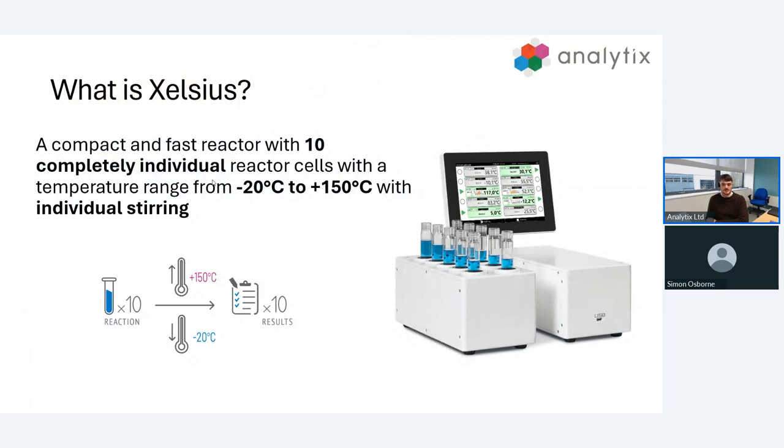What is Excelsis? Excelsis is a 10 position reaction station capable of independent temperature control in all 10 positions. We have a huge temperature range from minus 20 all the way to 150, and with independent control we can have one vial at minus 10 and the other at 140 with no problems. We also have independent stirring in all 10 vials. At its heart, Excelsis is a 10 in 1 reactor capable of replacing 10 heating cells, mantels, cooling baths, stirrers, all in one compact solution.